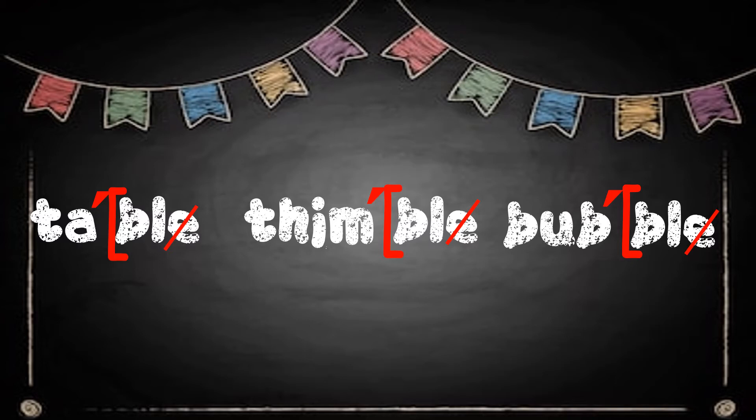Let's look at the word 'table.' How do we code an A that is open and accented? It's going to be long and we code it with a macron. The syllable here is 'tay.' The A is not followed by a consonant and the syllable is accented.